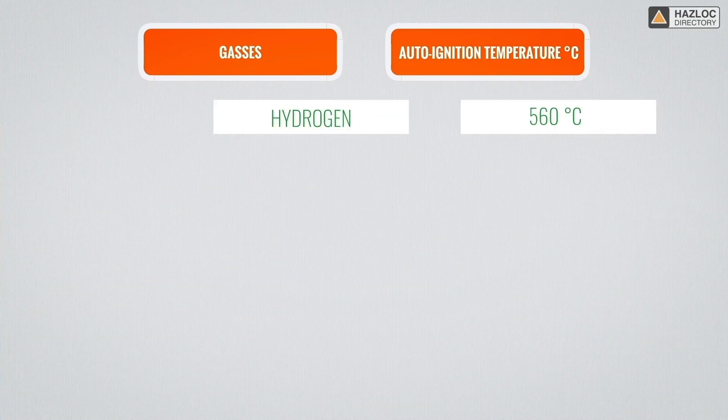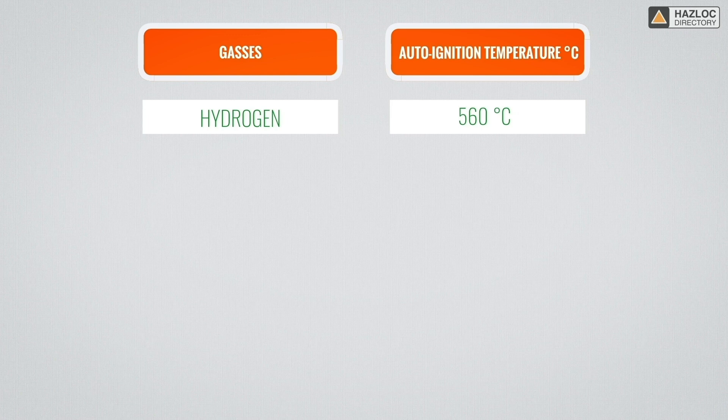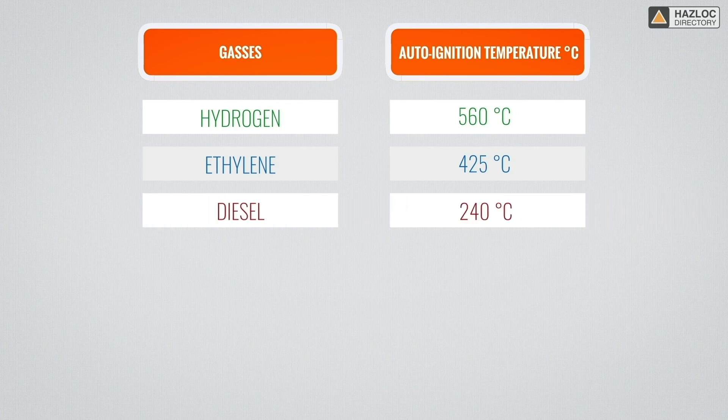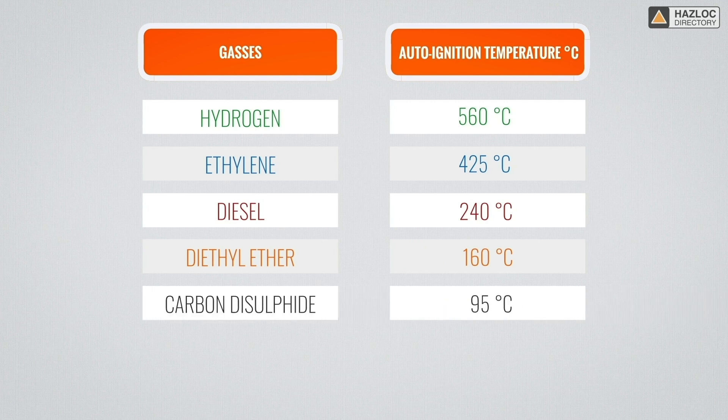For instance, hydrogen has an auto-ignition temperature of 560 degrees Celsius, ethylene 425 degrees Celsius, diesel 240 degrees Celsius, diethyl ether 160 degrees Celsius, and carbon disulfide has 95 degrees Celsius.